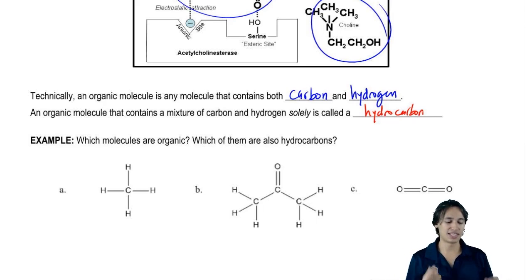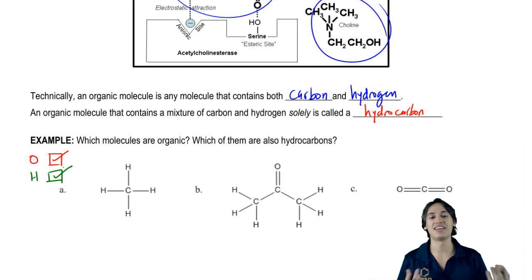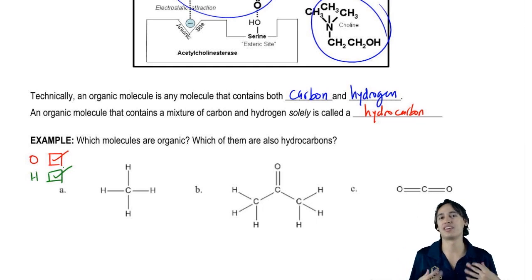So hopefully what you said was that letter A is definitely organic. I'm just going to put an O with a checkbox because it's made out of carbon and hydrogen. Is it also a hydrocarbon? I'm going to put H. Yes, it is because it only has carbon and hydrogen.